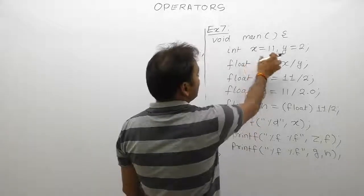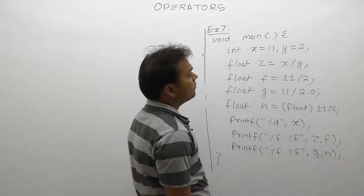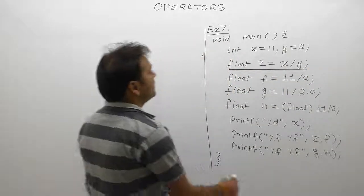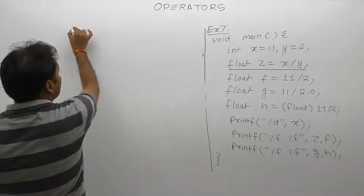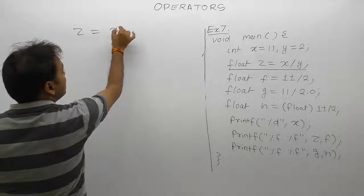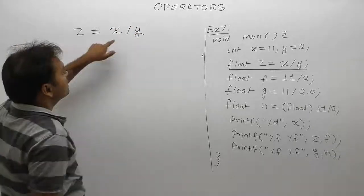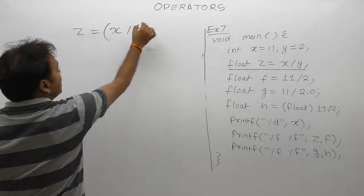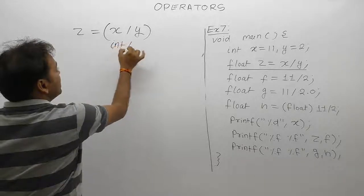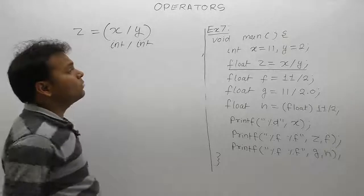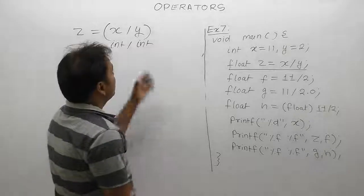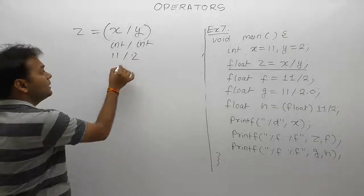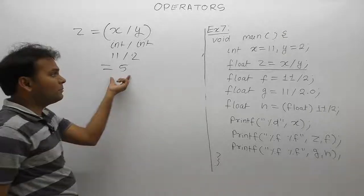In the first case, x and y are both integer type operands. Again, x is integer and y is also integer, therefore the result is also integer. X is 11, so 11 divided by 2 with integer division is 5.